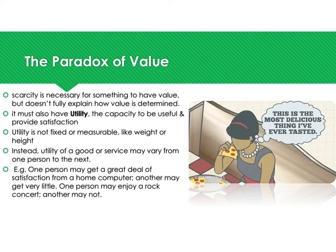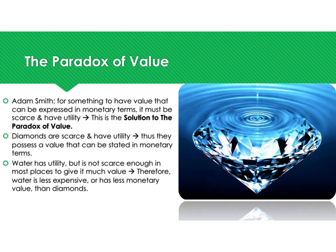Utility is not fixed or measurable like weight or height. The utility of a good or service may vary from person to person — you might enjoy a bowl of cereal while I might not. Therefore, utility differs and cannot be measured. Diamonds are scarce and have utility, so they possess high monetary value. Water has utility but is not scarce enough in most places, so it has less monetary value than diamonds.